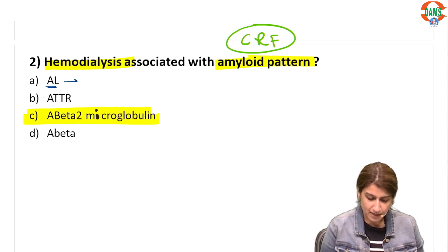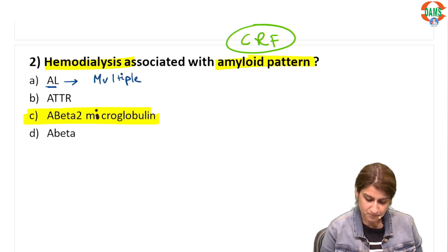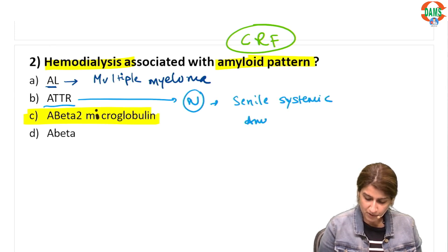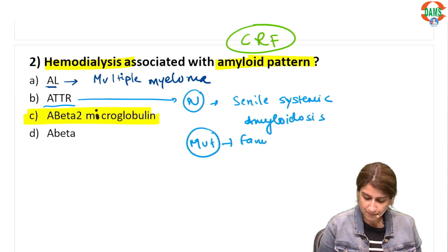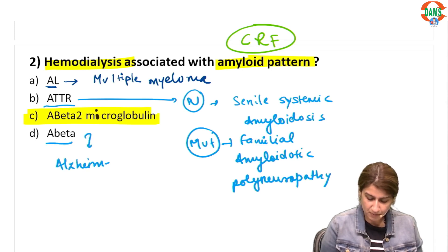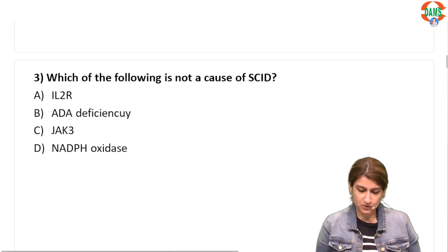AL amyloid is the pattern seen in multiple myeloma. ATTR — if normal — is seen in senile familial systemic amyloidosis; if it is mutant ATTR, it is seen in familial amyloidotic polyneuropathy. Aβ is seen in Alzheimer's disease.